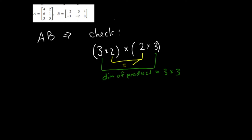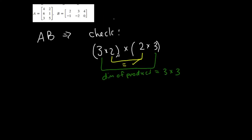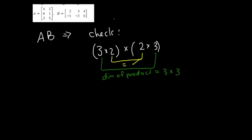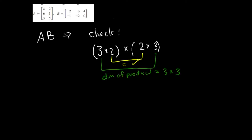I'm going to take this to the next page because I'm going to need some space. I want to do A times B, and I'm allowed to do it, and I expect my product to be a three by three matrix. Matrix A is: 4, 2, 6, 1, 3, 5. Now I'll take this matrix and multiply it by matrix B: 2, 3, 4, and negative 1, negative 2, 0.